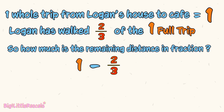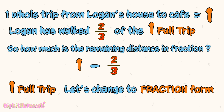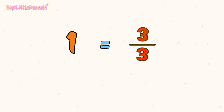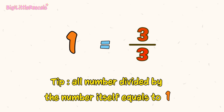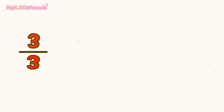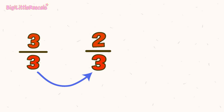To make this subtraction easier, let's change the one whole to fraction form. One is equal to three out of three, because three divided by three equals one. Remember: any number divided by itself equals one. We use three out of three so the denominator — the bottom number — is the same as in two-thirds. Both fractions need to have the same bottom number so we can subtract easily.